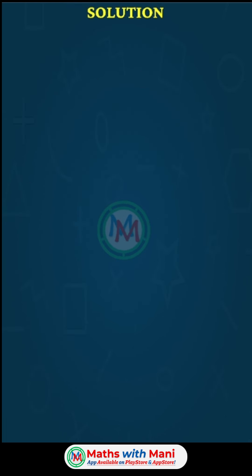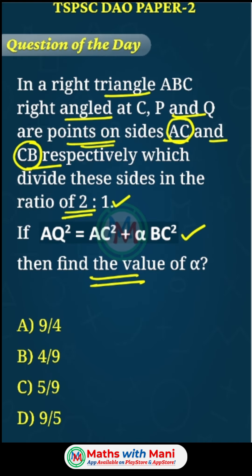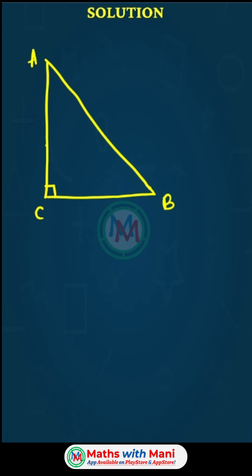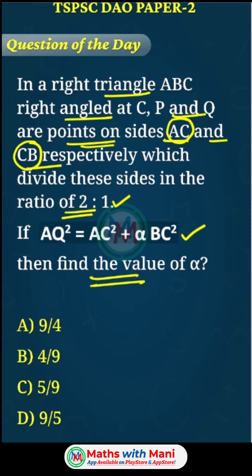First I will draw a right angle triangle ABC with the right angle at C. This is A and this is B. On AC is point P which divides AC in the ratio 2:1, so A side has two parts and C side has one part. Similarly on BC is point Q.